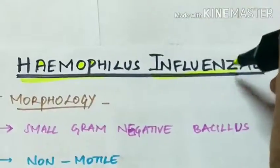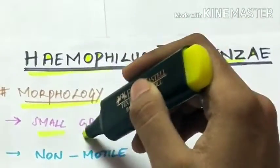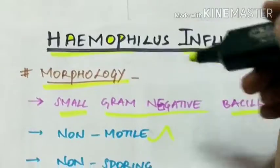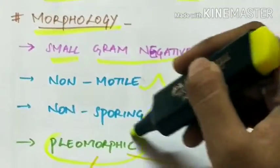Haemophilus influenzae. Morphology. They are small gram negative bacilli which are non-motile and non-sporing. They are pleomorphic.